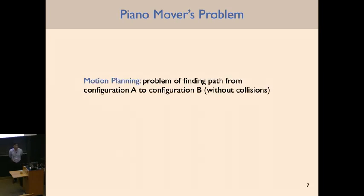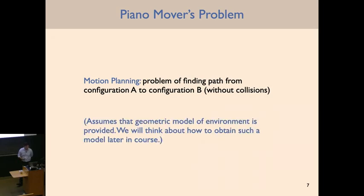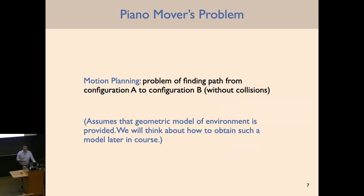So here's the motion planning problem: the goal is to find a path — some trajectory — from configuration A to configuration B for your robot without any collisions with the environment. We assume we have a geometric model of the environment provided to us, like a CAD model. We're not worrying about how to get that model right now — we assume someone has given you a model of the robot and the environment, and our goal is to solve the motion planning problem.